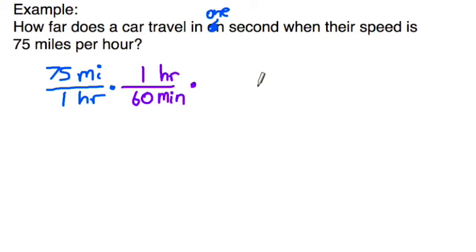We don't want minutes because we want to know what happens in one second. So we want to get rid of minutes, make sure it goes opposite side of where the minutes is in the bottom here. We'll put one in the top. Next unit down for time is seconds. And for every minute, there are 60 seconds. So basically, this means that we're going to take 75, divide it by 60, take that answer, divide it by 60 again.